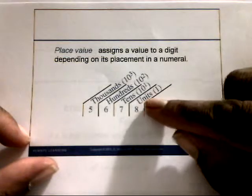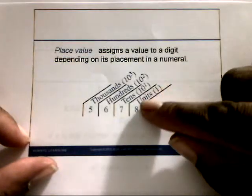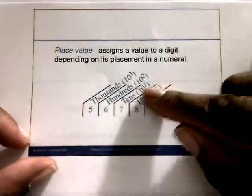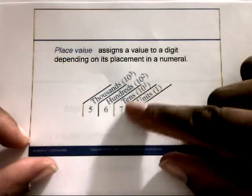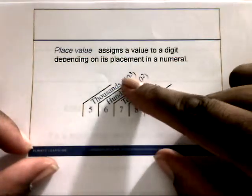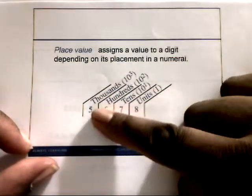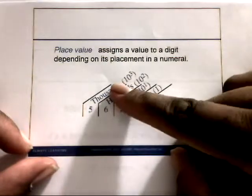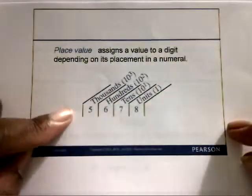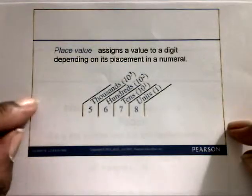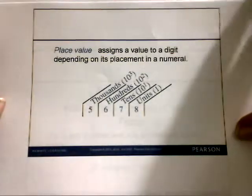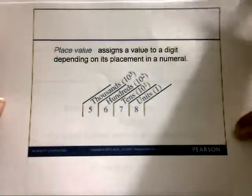The units are the ones place. The number to the left is the tens place, then the hundreds place, then the thousands place. This goes on and on: ten thousands, hundred thousands, millions, ten millions, hundred millions, billions, and so on.